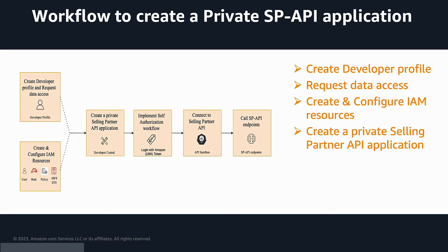Next is self-authorizing your application. You can self-authorize your application in draft status — there is no need to publish a private application. Then connect to SP API. After the setup is completed, you are now ready to execute a sample SP API call. For this purpose, we recommend using Postman and making a call to one of our sandbox endpoints.